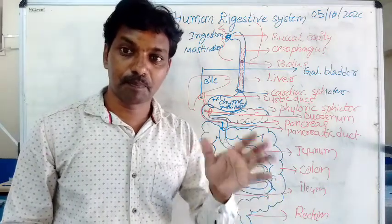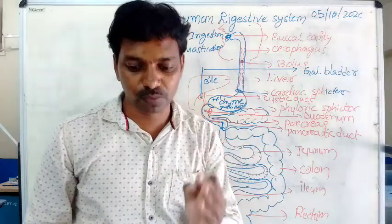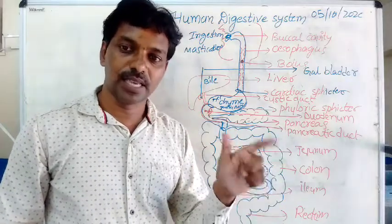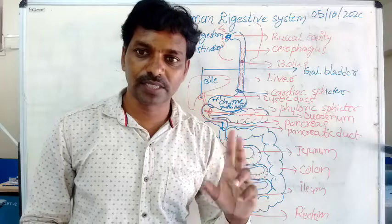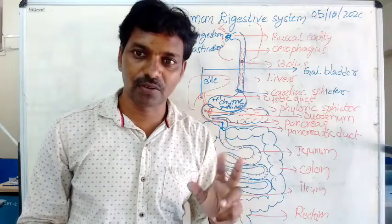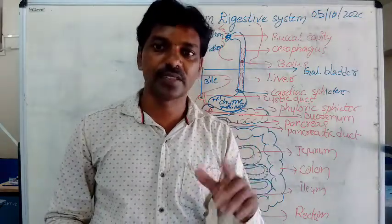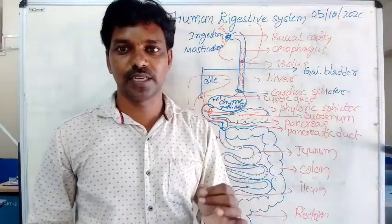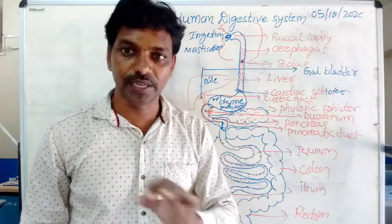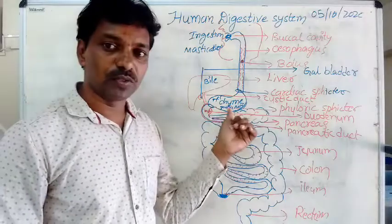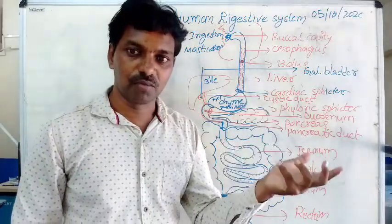Gastric juice releases pepsin. Pepsin acts on proteins and changes them as peptones. What is released by the stomach walls? Gastric juice and hydrochloric acid. Gastric juice contains the enzyme pepsin, which acts on proteins and changes them as peptones. After this, the food turns into chyme in the stomach.